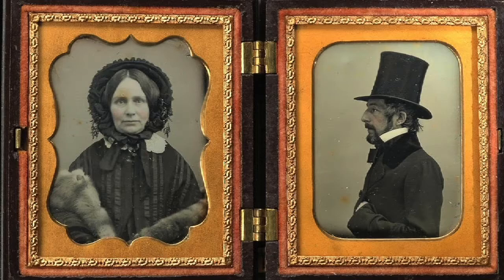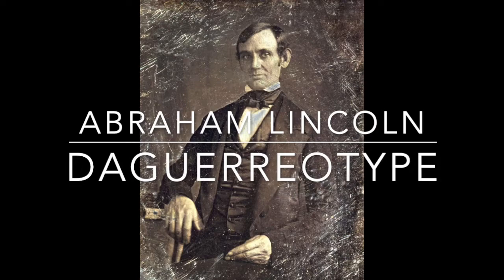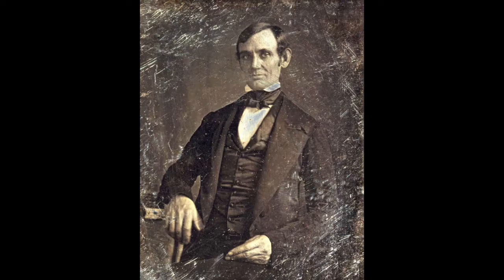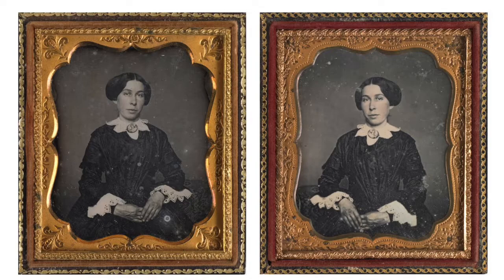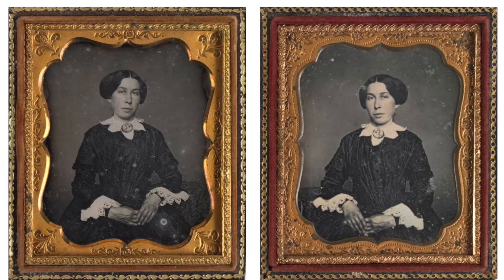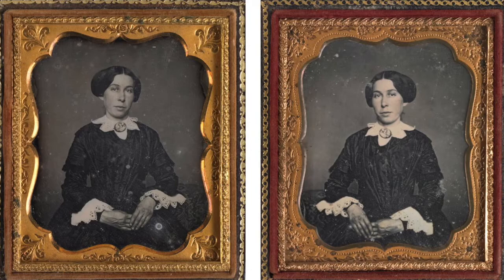The daguerreotype was essentially a sheet of silver-plated copper that was polished and made light-sensitive, and exposed within the camera obscura for a couple of seconds to a few minutes. Depending on the subject and its details, the amount of time and exposure was usually an estimate determined by the person making it. After being exposed and treated through a chemical process, the image would be complete. These new daguerreotype images proved more durable and yielded a lasting image compared to Niépce's original conception, and soon became a widely available and popular form of photography in the 1840s and 1850s.